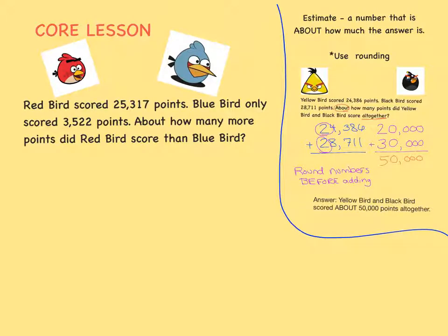Red bird scored 25,317 points. Blue bird only scored 3,522 points. About how many more points did red bird score than blue bird?